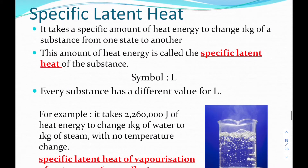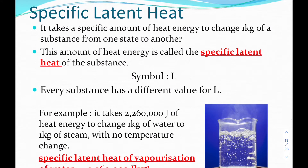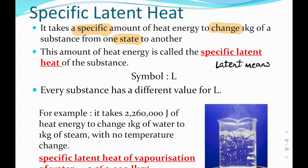Just as we did with specific heat capacity, it will take a specific amount of heat energy to change one kilogram of a substance from one state to another. This specific amount of heat energy is called the specific latent heat of the substance. The word latent means hidden. It's sometimes referred to as hidden heat, because when the state is changing, there is no temperature change.